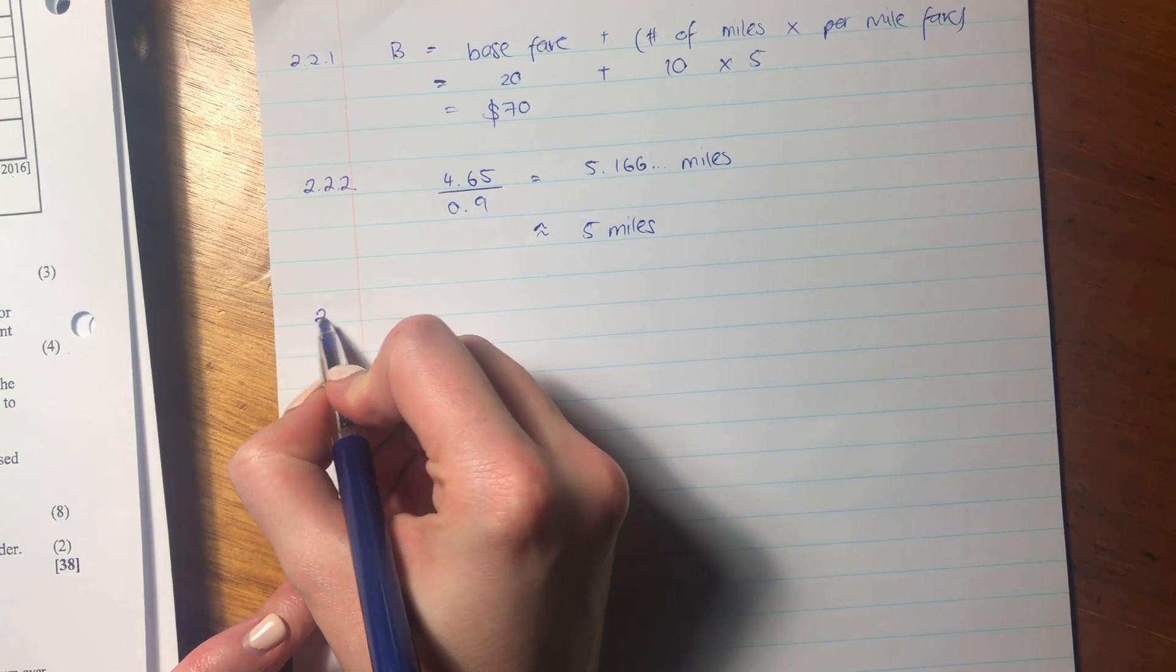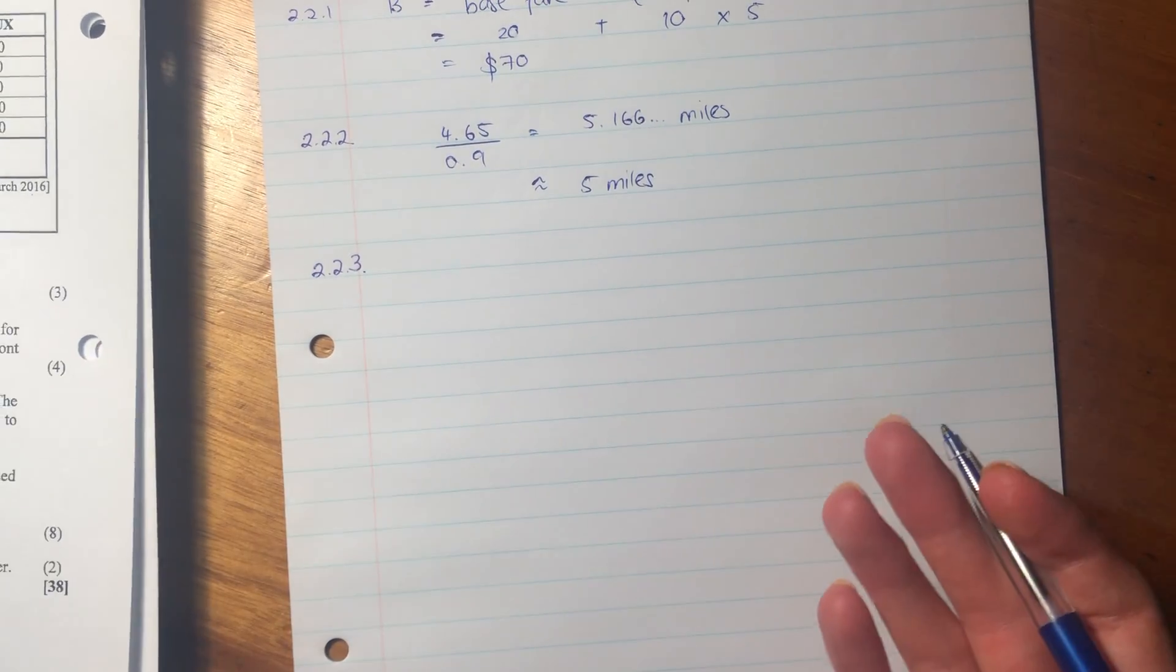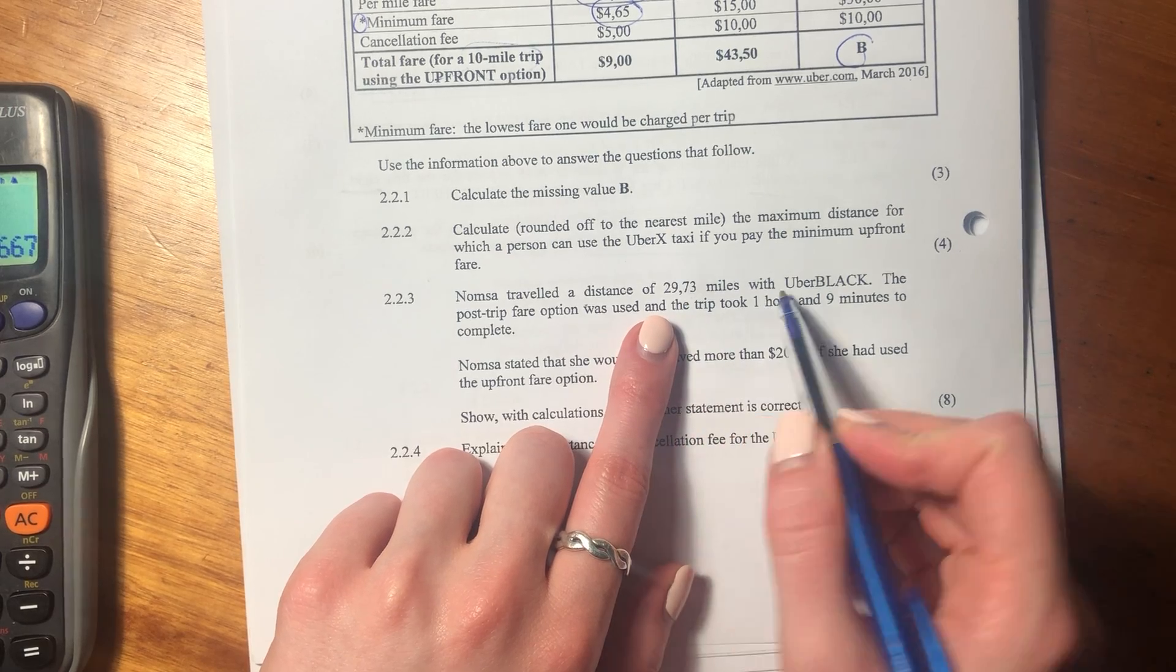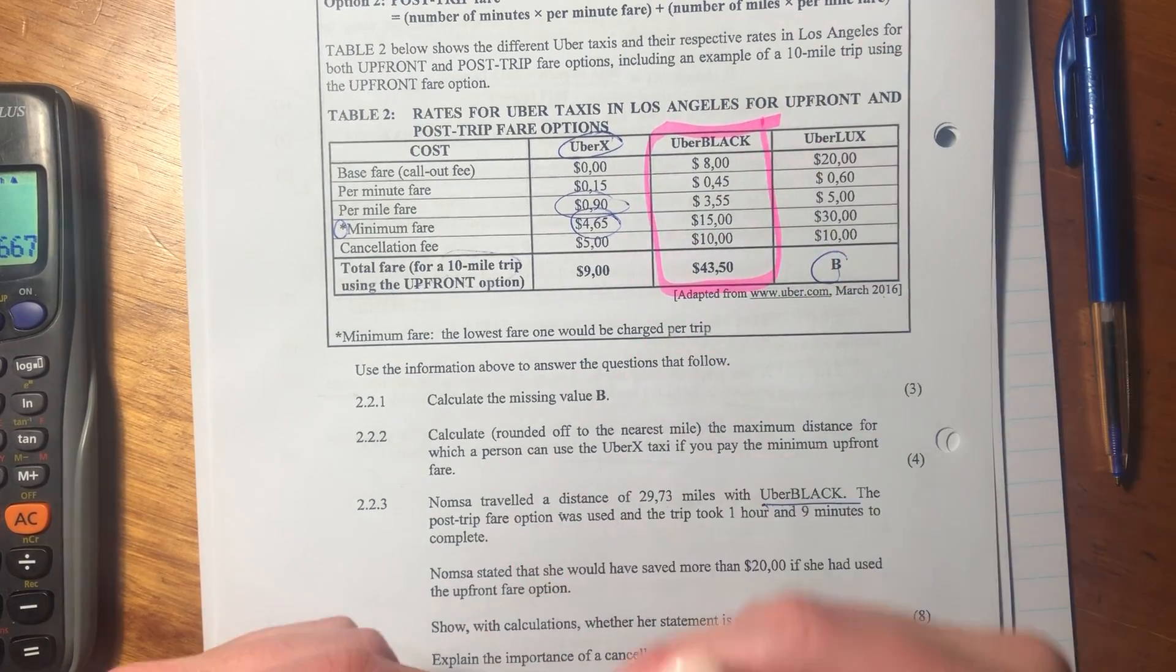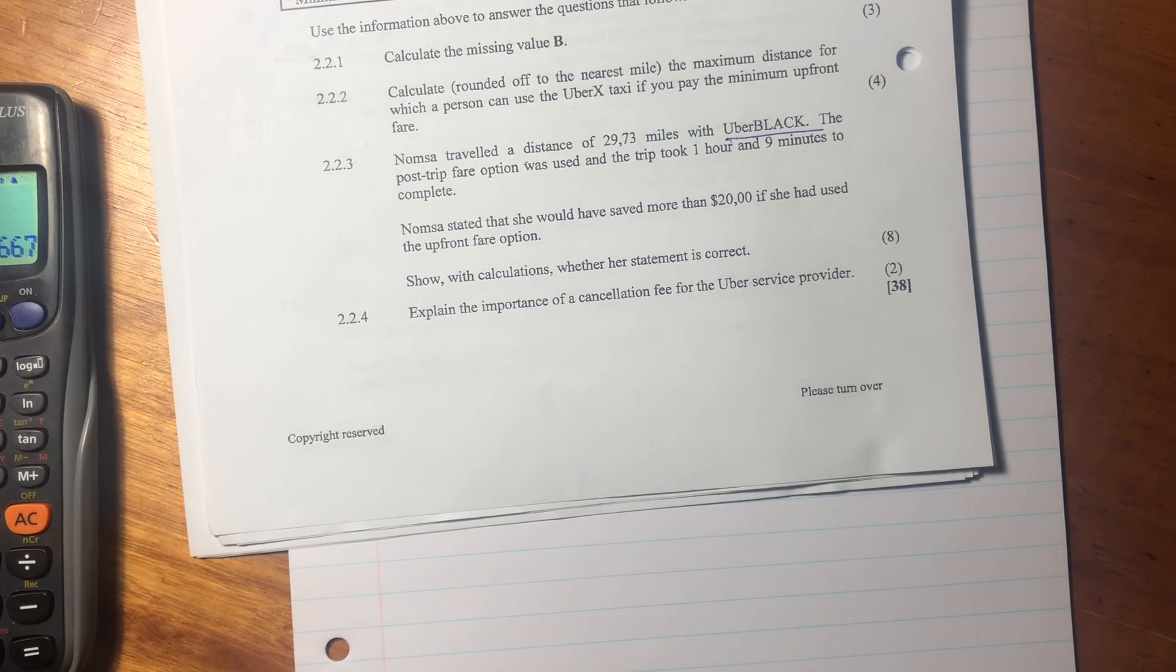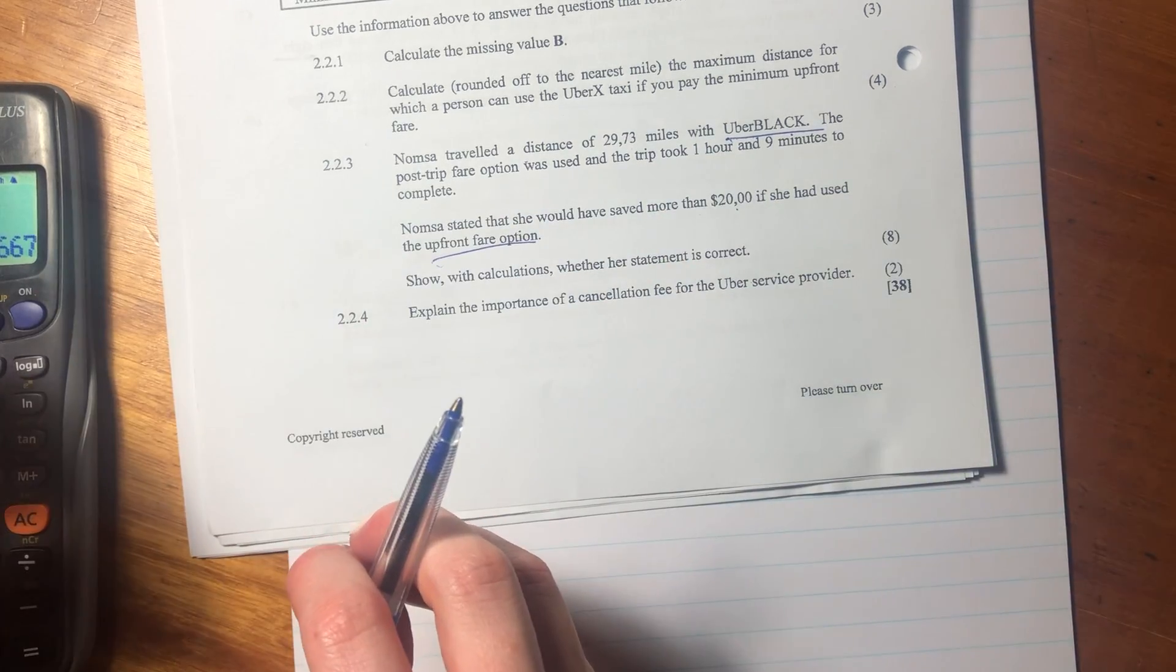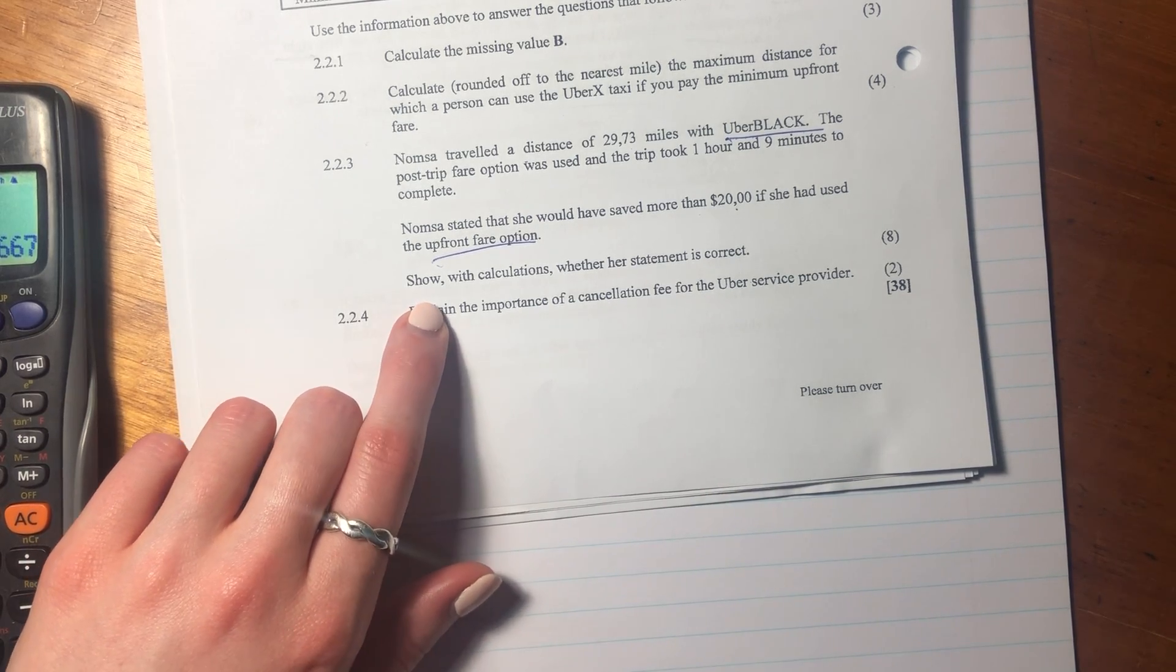So the important thing there is that you understand what the inputs are, but it's not too difficult to actually do the math here. So much of math lit, guys, is actually just understanding what is being asked. Because sometimes it's actually the words that are more confusing than it is necessarily the scenario. So let's move on to 2.2.3. It says, Normsa traveled a distance of 29.73 miles with Uber Black. So we know that we're sitting in this column. The post-trip fare option was used, and the trip took 1 hour and 9 minutes to complete. Normsa stated that she would have saved more than $20 if she'd used the upfront fare. So she'd used the post-trip fare, and she's saying, I wish I'd used the upfront fare because I would have saved money.